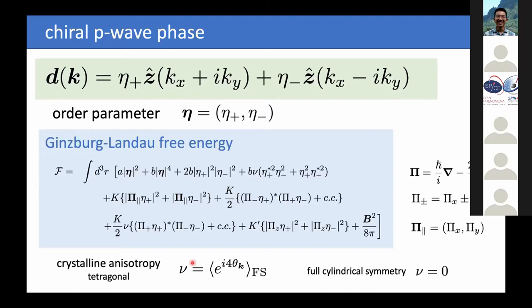In this formulation I introduce the parameter nu. The parameter nu appears in some of these terms and carries important information: if the system is fully cylindrically symmetric, nu equals zero. One can identify that an averaging over in-plane angles is occurring in certain terms involving eta-plus and eta-minus, because taking the phases together gives e^{i4θ}. This is only finite if there is real crystalline anisotropy of a tetragonal system. I now use this Ginzburg-Landau free energy to discuss domain walls.